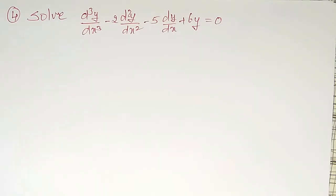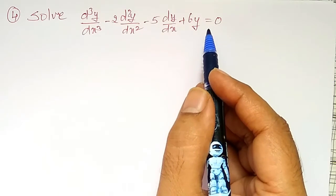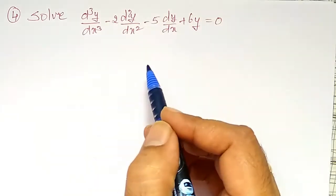In this video, another example on third order differential equation I am going to solve and it is homogeneous. Here right hand side is zero. That's why this differential equation is called homogeneous and CF itself will become its general solution.